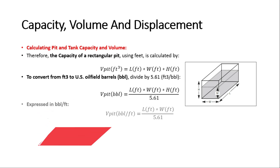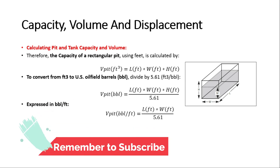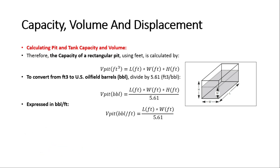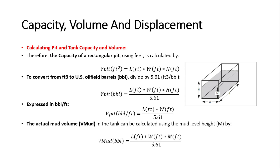You can also express capacity in barrels per foot by multiplying length by width divided by 5.61, because the height equals 1. If you need to calculate the actual mud volume, V-mud in tanks can be calculated using the mud level height M with the equation: L × W × M / 5.61. That completes the calculation of capacity and volume of mud tanks.